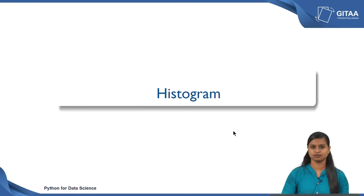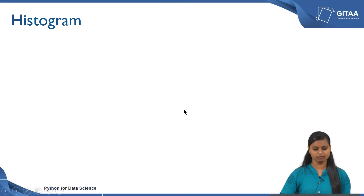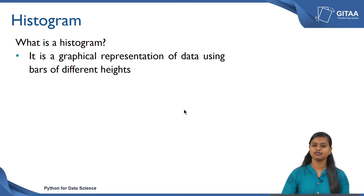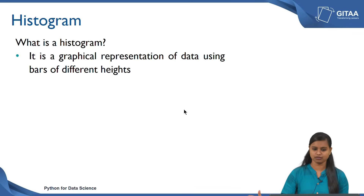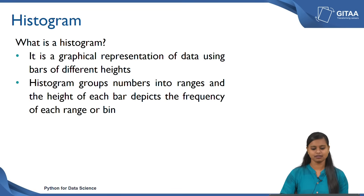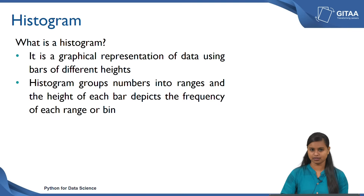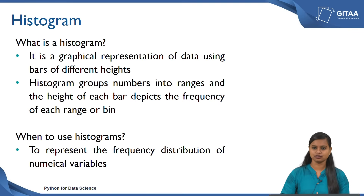Now we are going to see how to create a histogram. A histogram is a graphical representation of data using bars of different heights. Whenever you have a numerical variable and want to check the frequency distribution, you can use a histogram. Each bar gives a different height representing frequencies, and the histogram groups numbers into ranges on the x axis, also called bins. For each bin you get the corresponding frequency by looking at the height of each bar.